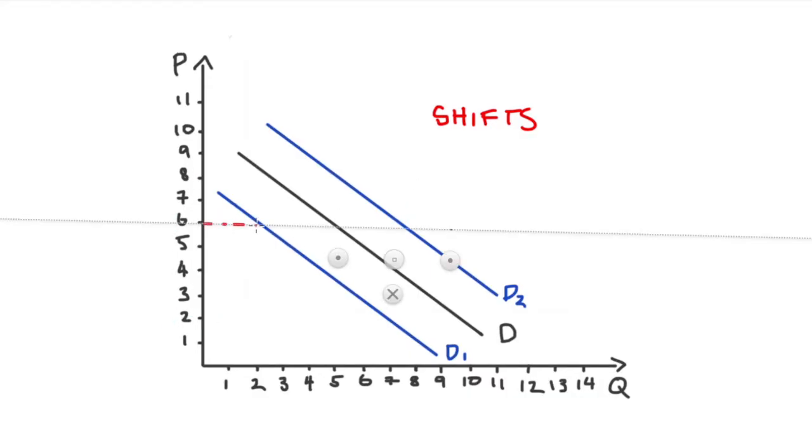For instance, if we held the price fixed at some amount, let's just say six dollars, we can see at the original demand curve D that we are demanding five units at that price. If we experienced an increase in demand, let's just say that our demand shifted out to D2, we can see at that same price that now more is demanded, and that looks to me about 7.75.